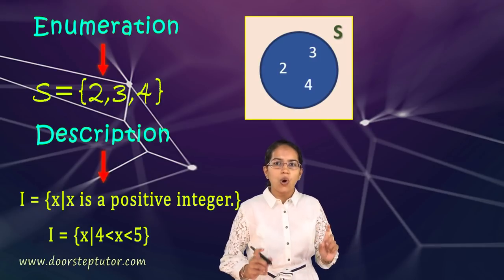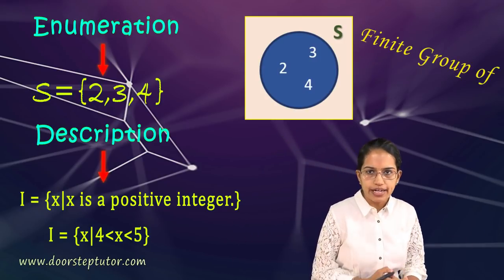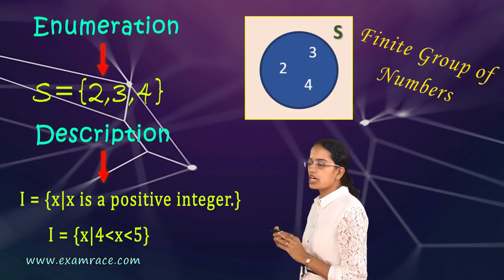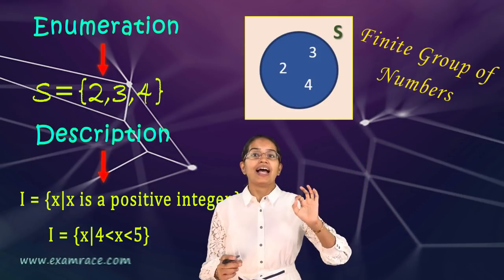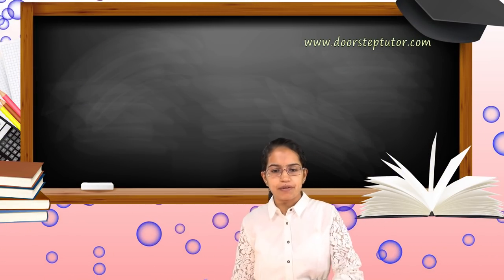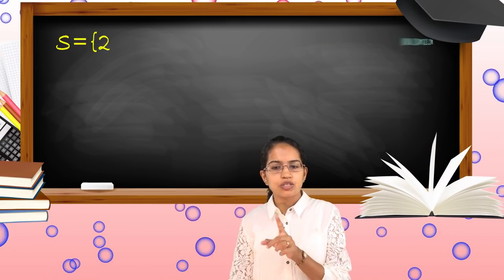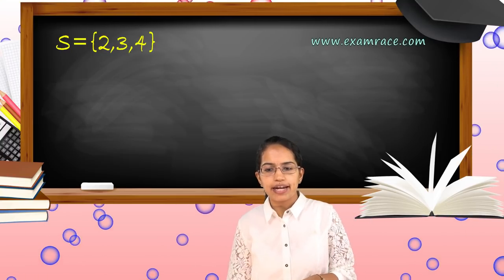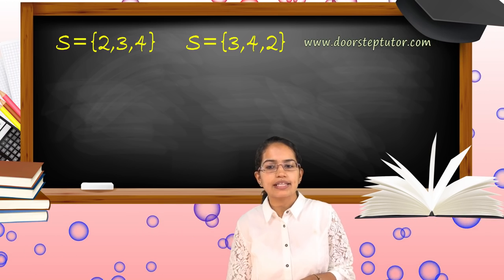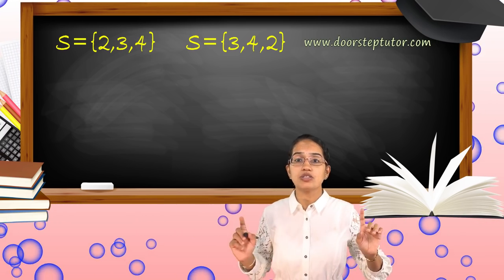Set we can say is always a finite group of numbers. You have finite number of elements which are part of the set. And set is not an ordered pair. If I write S is equal to 2, 3, 4 or I write S equal to 3, 4, 2, it's one and the same thing. The order is not important.